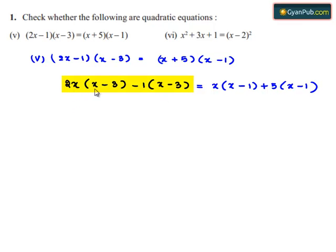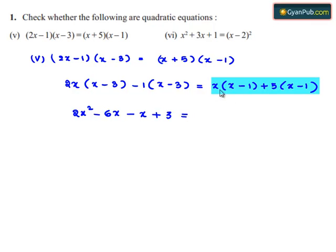2x times x is 2x², and 2x times -3 is -6x. This becomes -x, and -1 times -3 is +3. On the right side, x times x is x², x times -1 is -x, 5 times x is 5x, and 5 times -1 is -5.